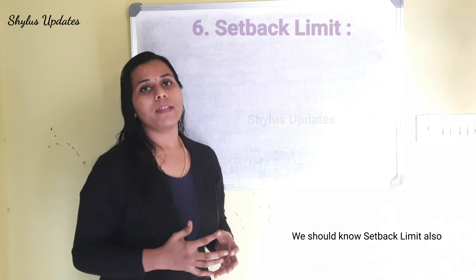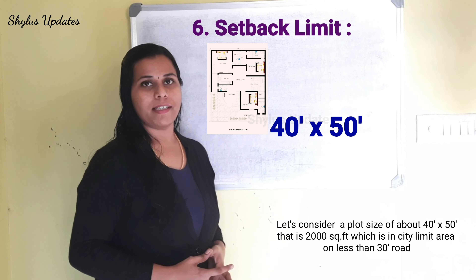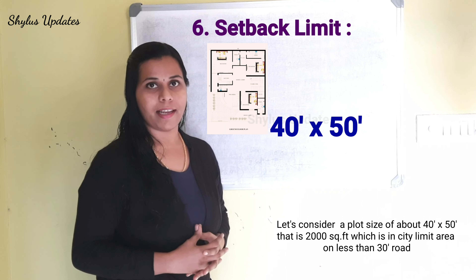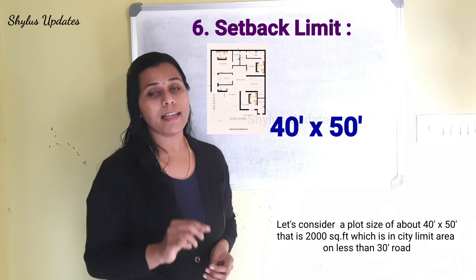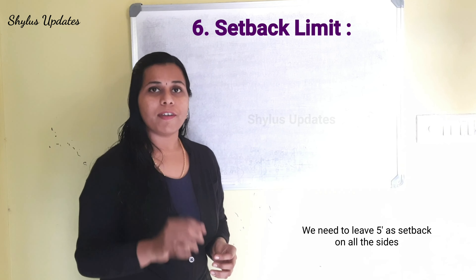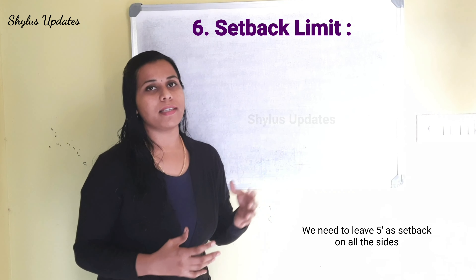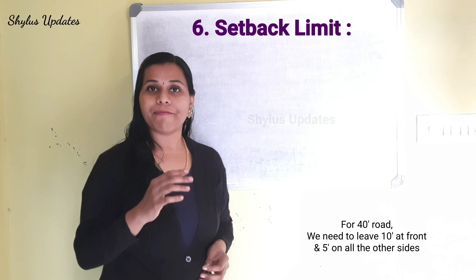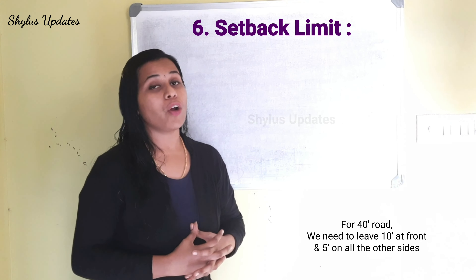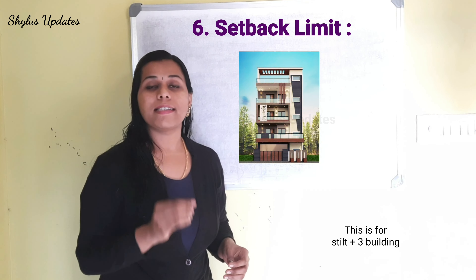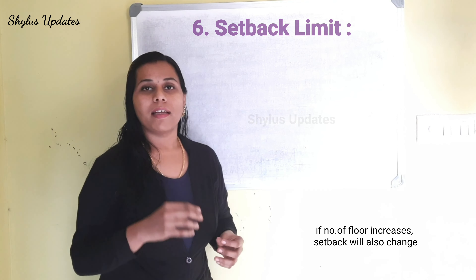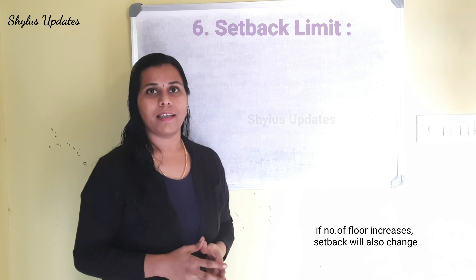Let's consider a plot size of about 40 feet by 50 feet, that is 2000 square feet, which is in a city limit area. For a road less than 30 feet, we need to leave 5 feet as setback on all sides. For a 40 feet road, we need to leave 10 feet at the front and 5 feet on all other sides. This is for a stilt plus 3 building. If the number of floors increases, the setback will also change.